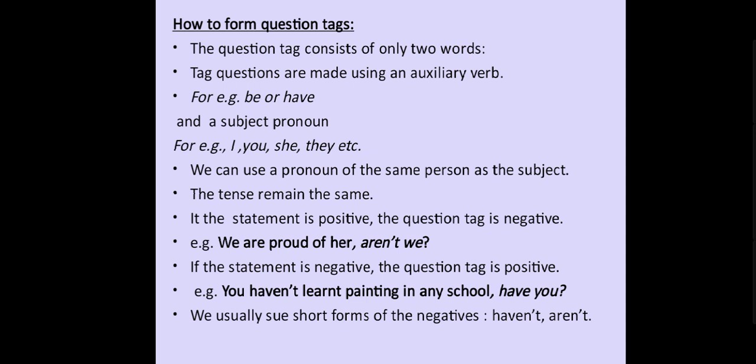Now, if the statement is negative, the question tag is positive. For example, 'You have not learned painting in any school.' This is a negative statement, so our question tag will be positive: 'have you?' The auxiliary verb is 'have' and the subject is 'you', so we write 'have you' at the end of the sentence.